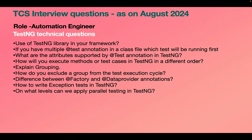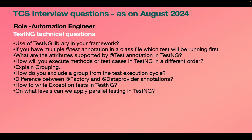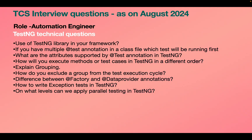Why are we using TestNG? To make our code more readable — we use priority and annotations so that anyone from the client side who sees our code can understand its purpose. We also use TestNG for reporting purposes. It makes our automation framework more organized. If you have multiple @Test annotations in a class, which test will run first? It follows alphabetical order — methods starting with 'a' execute first.